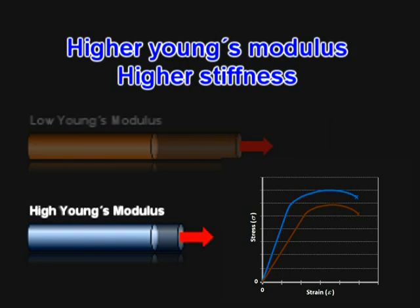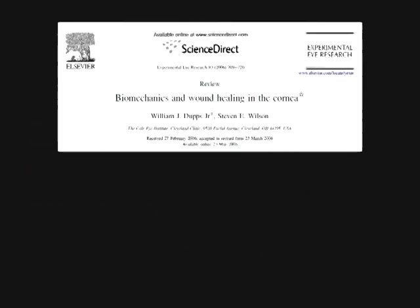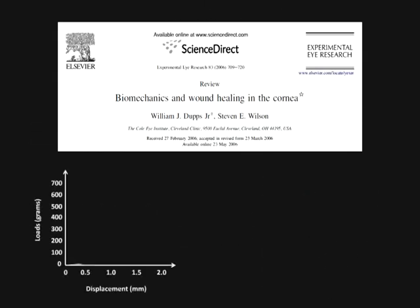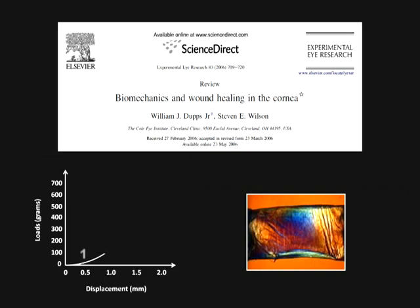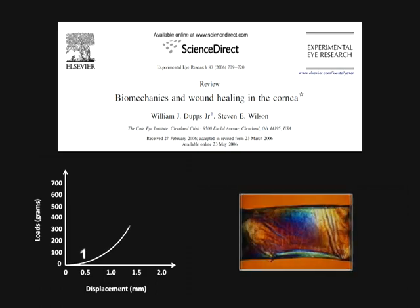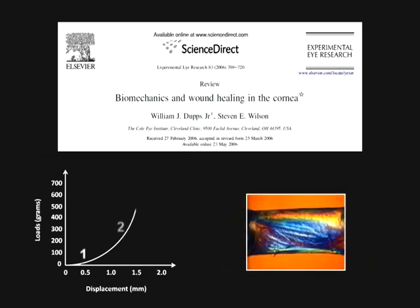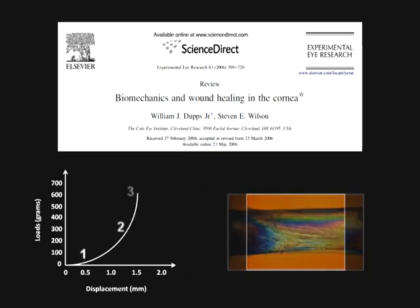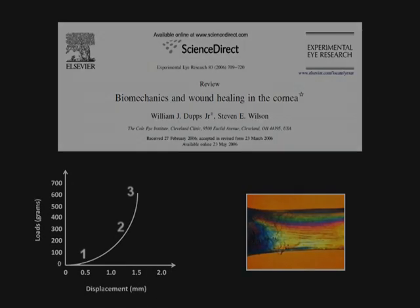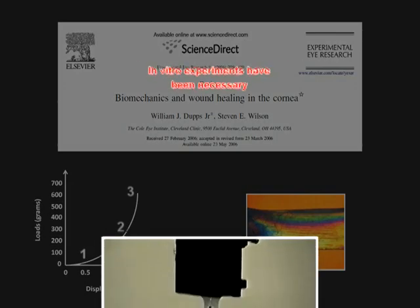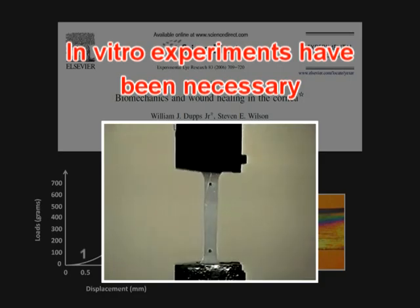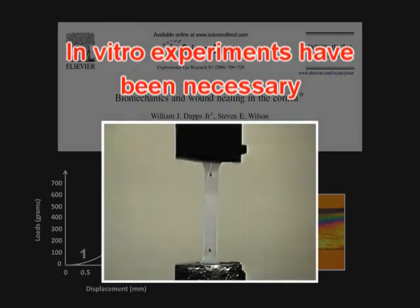If a material has a higher Young's modulus, it is also stiffer. However, biological tissues such as the cornea tend to be non-linear, which makes the determination of Young's modulus more complicated. In order to measure Young's modulus of the cornea, non-physiologic in vitro experiments have been necessary.